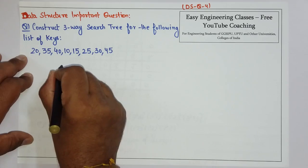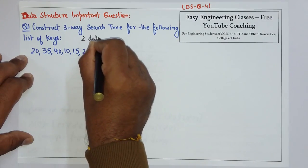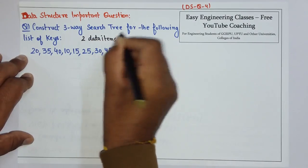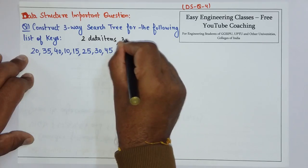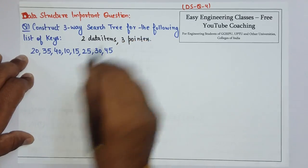Now, three-way search tree means there can be only two data items in a single node and three pointers can be present.